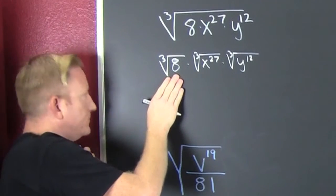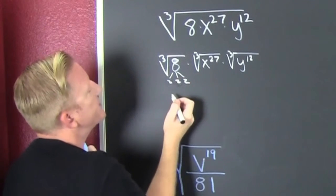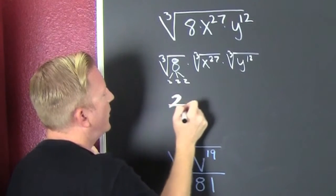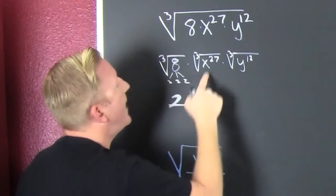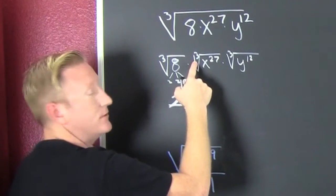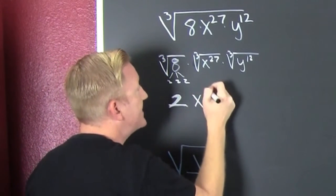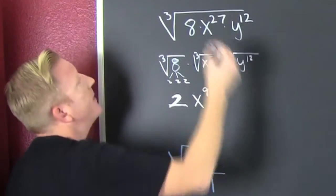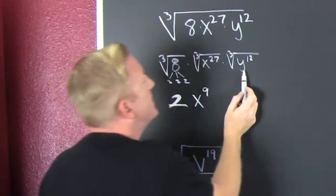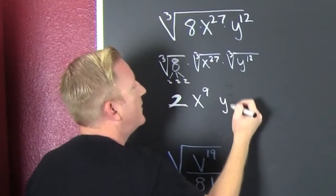So we break down 8 as 2 times 2 times 2. There are 3 deuces, so I get a deuce out. And 27 divided by 3 — what is 27 divided by 3? 9. So that's x to the 9. I'm assuming the problem says to assume all variables are positive, but it's the third root so that doesn't matter. So then this is y to the fourth.